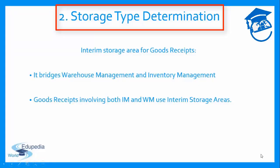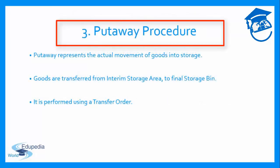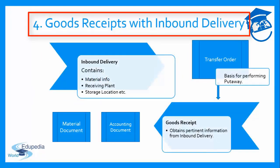The next step is storage type determination. The system needs to determine the interim storage area for each material being received — specifically the goods receipt zone and the issuing storage bin, which is usually a dynamic storage bin with the purchase order number as its bin coordinates. The system does this using warehouse management movement types for externally procured materials. Following storage type determination, the system sorts out putaway and the goods receipt posting. Transfer orders are required to process putaway, and they must refer to the inbound delivery.